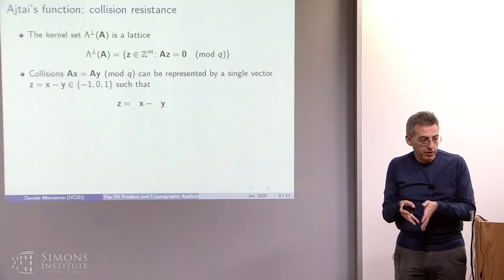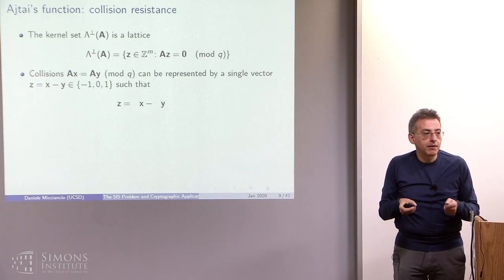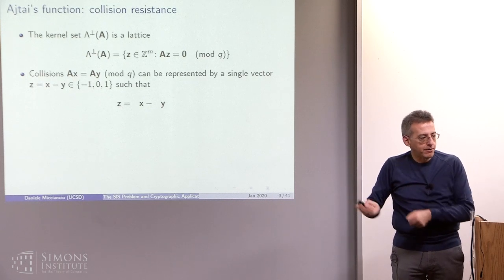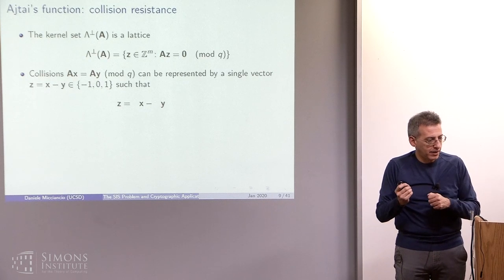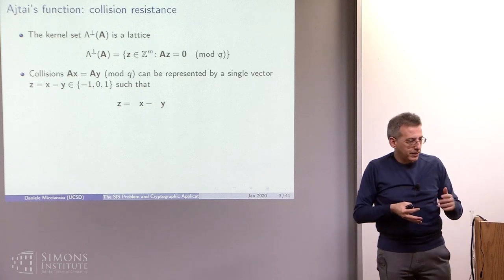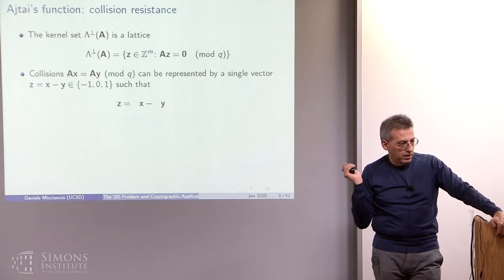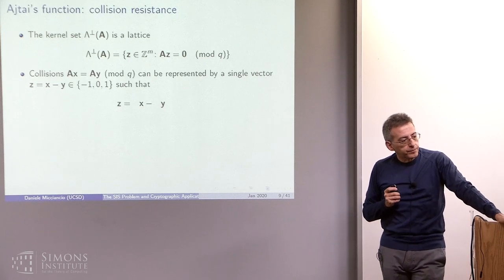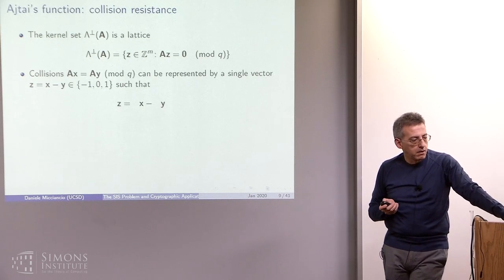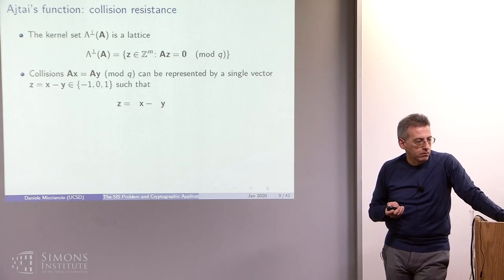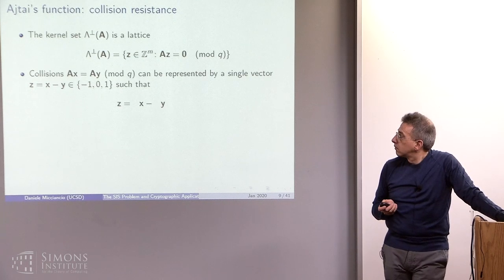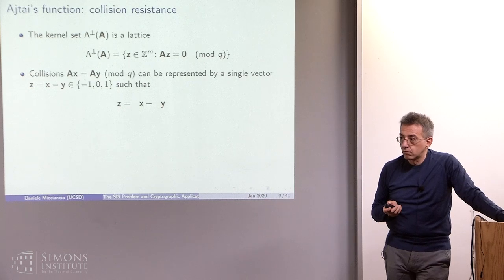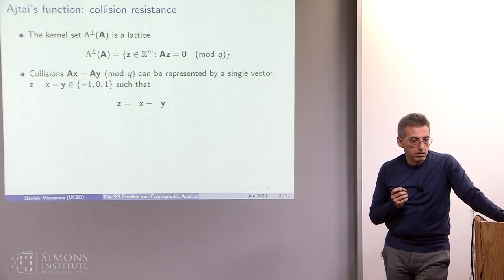The real difference between SIS and LWE is not that LWE is using As plus error — it's that the error relative to the determinant is different. If you write both of them in the same form A times c equals that, the density of the lattice is different in both cases. In the SIS case, the lattice is very dense — it has tons of short vectors. In the LWE case, the lattice is much sparser.